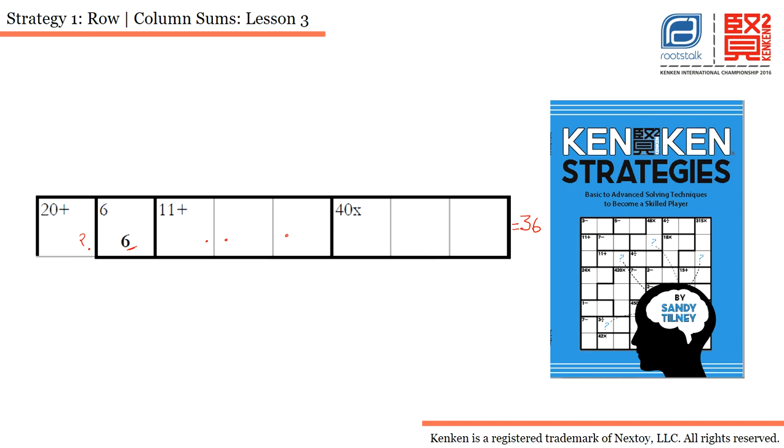It says 40x multiplication, that means I need to multiply three numbers and the answer has to be 40. So I have two possibilities: one is 2, 4, 5, that means 4 into 5 is 20 into 2 is 40. And the other option I have is 1, 5, 8, that means 8 into 5 is 40 and 1. There is no other possibility to get 40 by multiplying three cells.